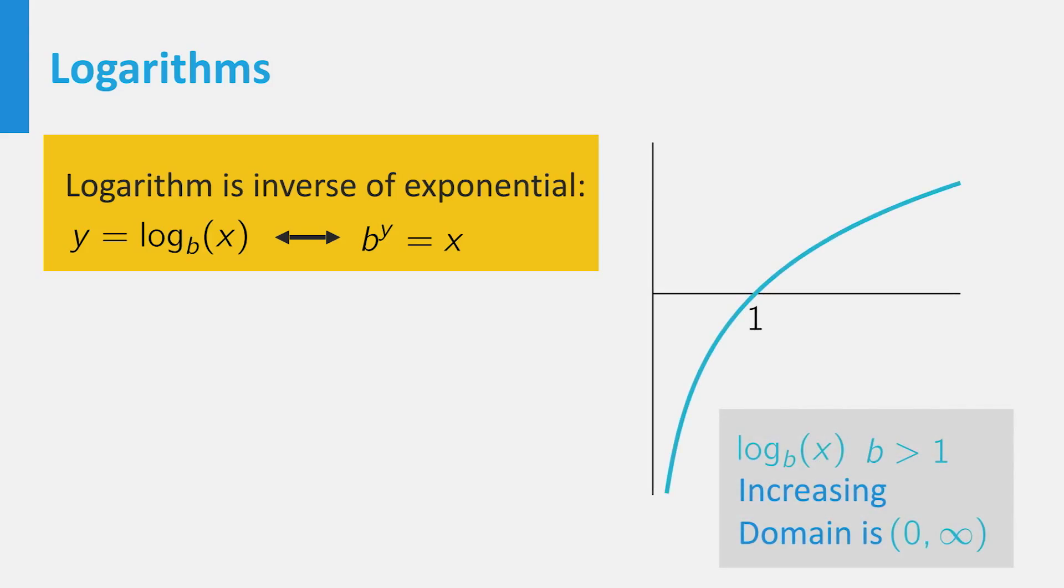For any base, the logarithm has a vertical asymptote at x equals 0. For b larger than 0, the graph is ever increasing.